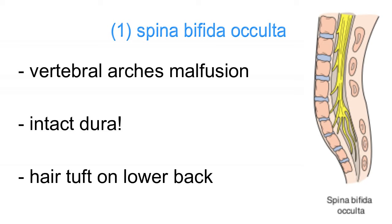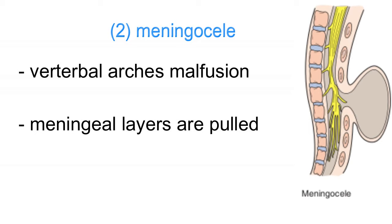In meningocele, there will be a sac protruding from the lower back with the meningeal layer inside it and CSF fluid as well, but there will be no neural tissues whatsoever.